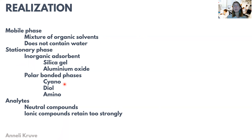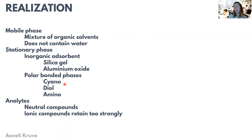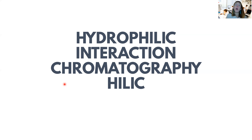Analytes are primarily neutral compounds — not too polar, not too non-polar. Ionic compounds are retained just too strongly. In the next video we are going to look into HILIC chromatography, which is a kind of modification between reversed phase chromatography and normal phase chromatography. See you there!